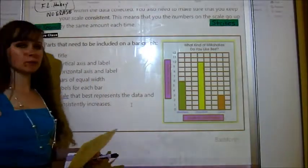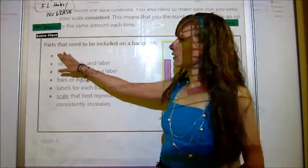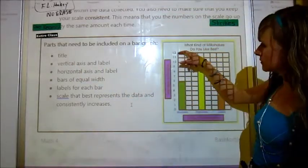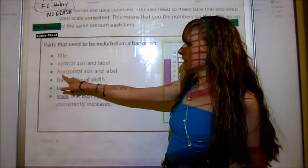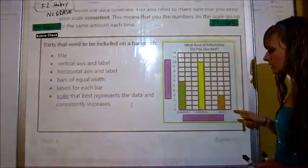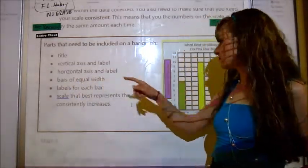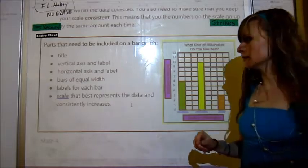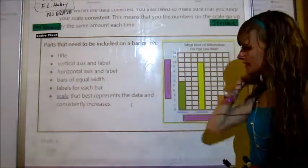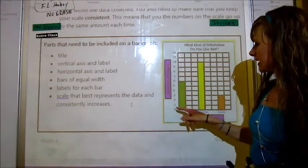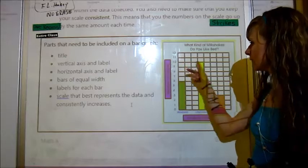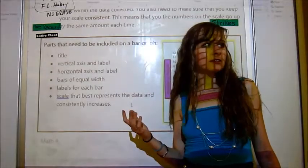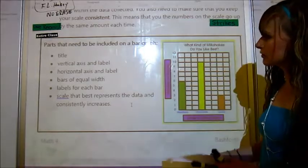Here are parts that need to be included on a bar graph. You need to make sure that you have a title. So right here, what kind of milkshakes do you like best? You need to have a vertical axis and a label. So here's the vertical axis and here's the label number of people. You need to have a horizontal axis and label. You need to have bars, bars of equal width. You need to have labels for each bar. So we've got strawberry, chocolate and vanilla. And you need to have a scale that best represents the data and consistently increases. So here's the data and it consistently increases by one each time.